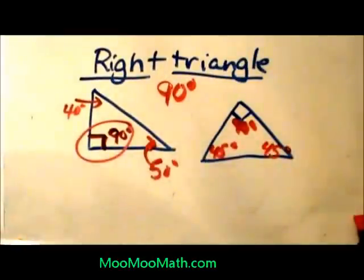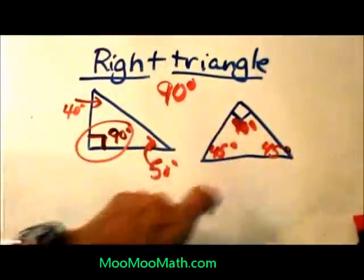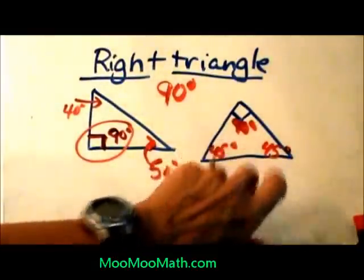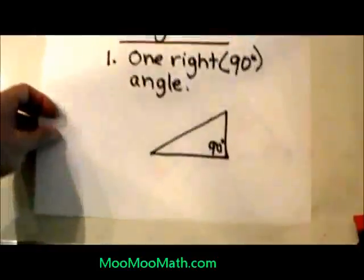So this is actually an isosceles triangle and it is also a right triangle. So we can classify it based on its angles, which this is a right angle for a right triangle. And we can also classify it by its sides. And since two of the angles are the same and two of the sides are the same, it is isosceles also.